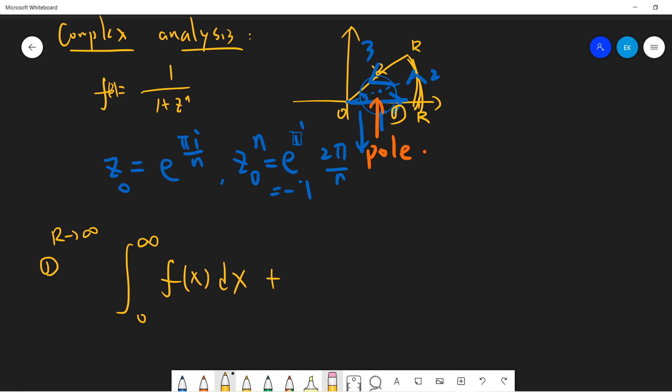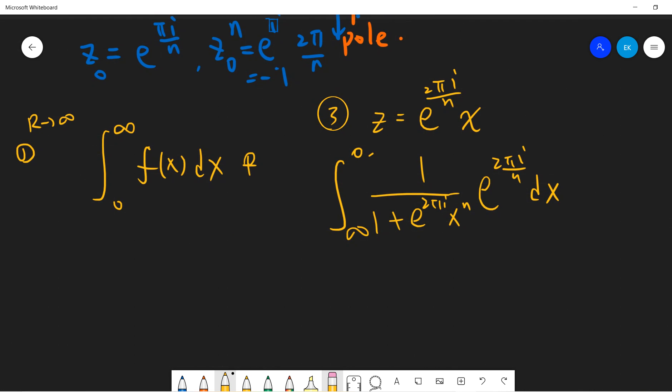And then let's talk about the third. And the third will be what? The third will be the same as one, but the difference is that we will let z equal to exponential 2 pi i over n times x. So 1 plus z to the n, exponential 2 pi i over n times x, 1 dz. So exponential 2 pi i divided by n dx. And then from infinity to 0. So you see this term is the same as this term. The only difference there is a multiplier.